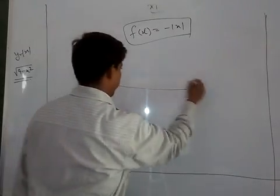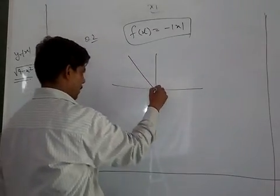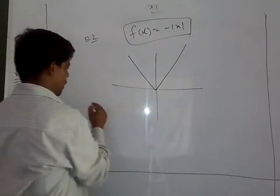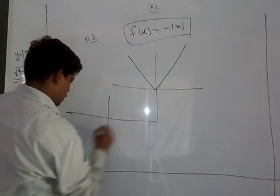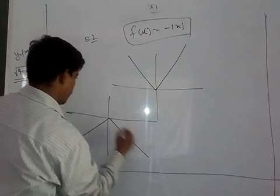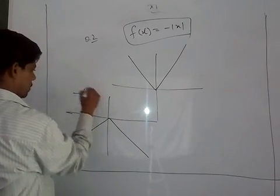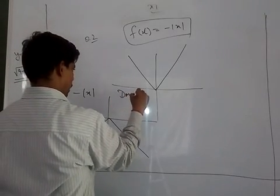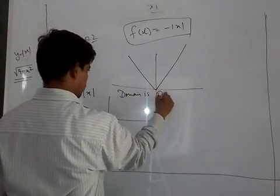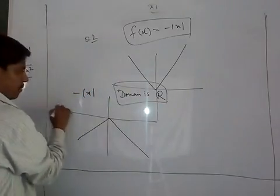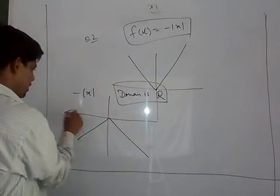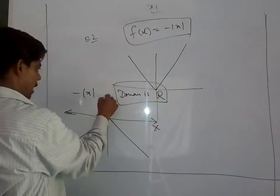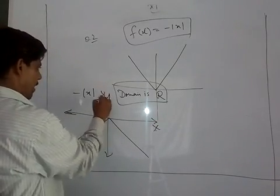I will tell you the graph of mod x. Mod x with a minus sign. So this is the graph of minus mod x. The domain is R, all real numbers, because no real number is excluded. Domain is whatever is allowed on the x-axis and range is whatever is allowed on the y-axis.